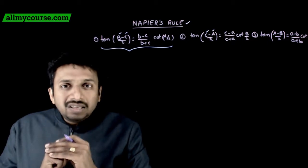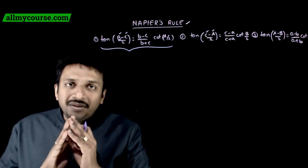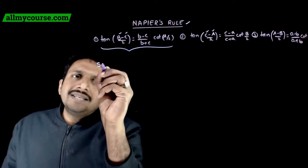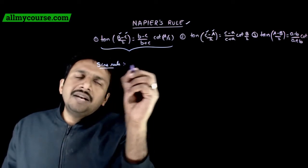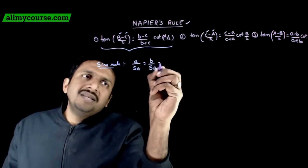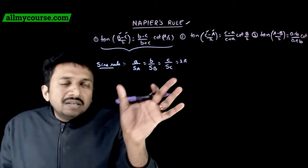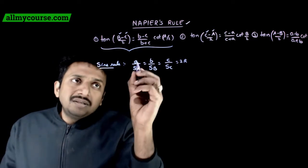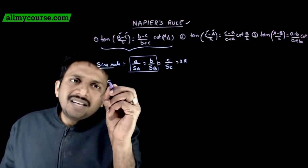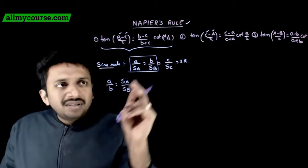Let us see how these formulas are obtained. These formulas are derived from the sine rule. Let us take one of these and derive it. The sine rule says that a over sin A equals b over sin B equals c over sin C equals 2R. This we have already derived. Taking any two of these, we can say that a by b is equal to sin A by sin B.